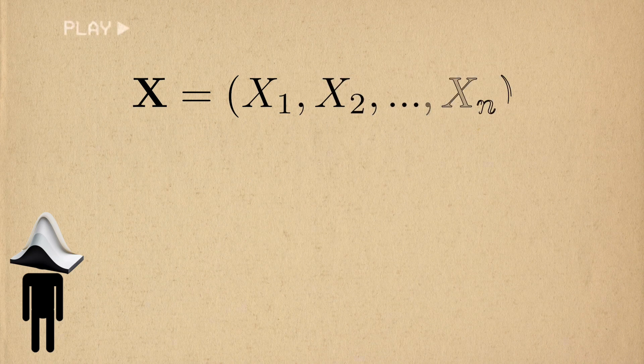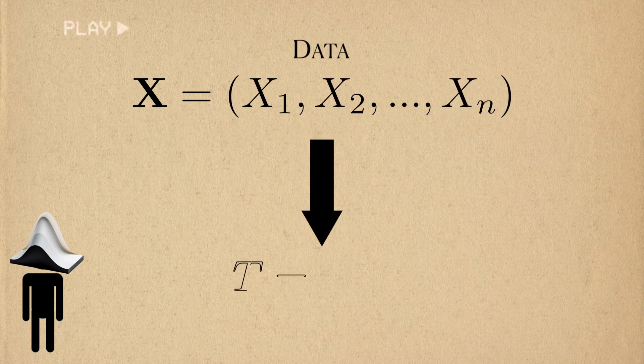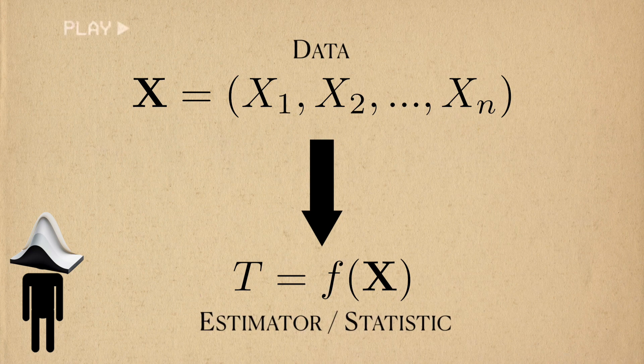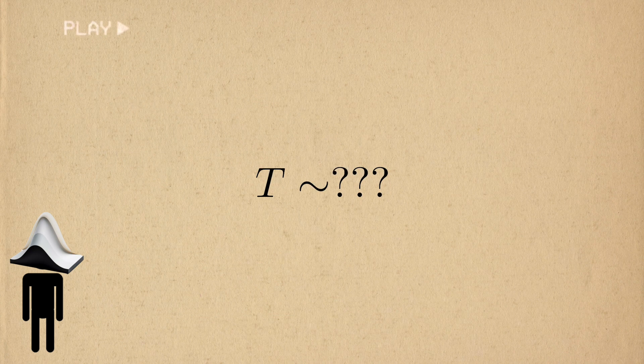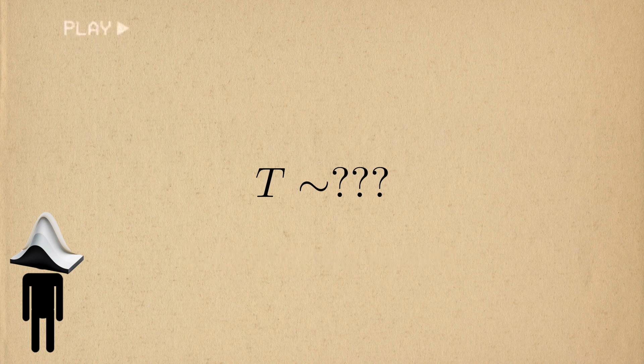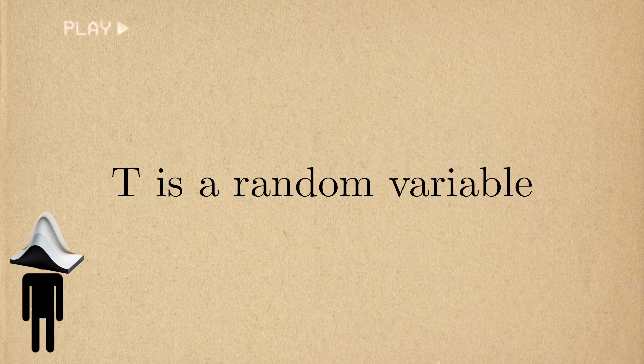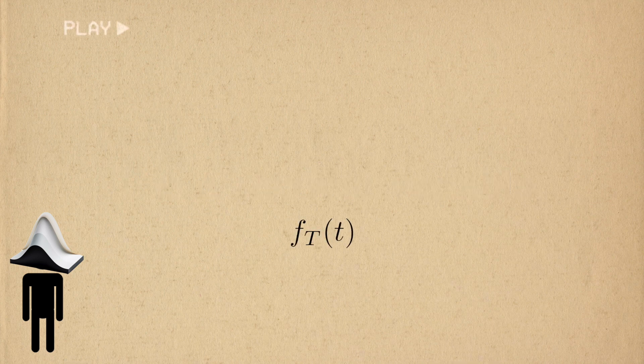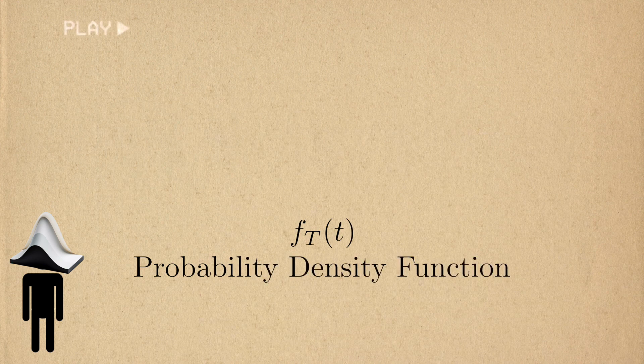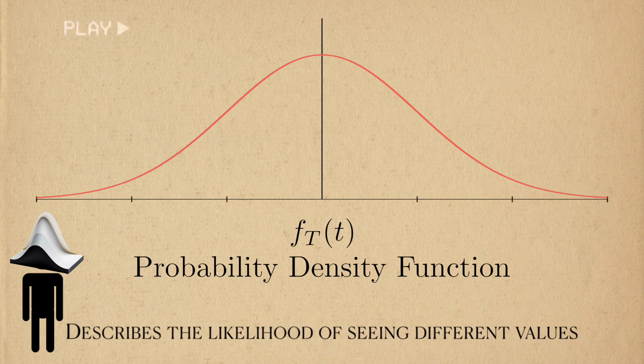It's well known that randomness in the data will translate into randomness in the estimator. Statisticians will model the structure of this randomness with mathematical objects. More precisely, statisticians describe both data and estimators as random variables. One way that randomness can be described in a random variable is in a function called the probability density function, or the PDF.